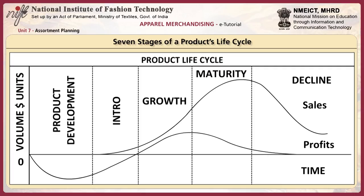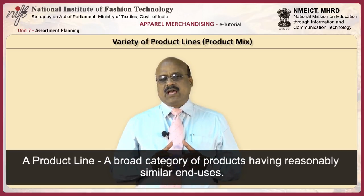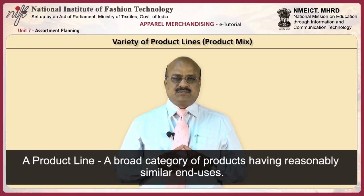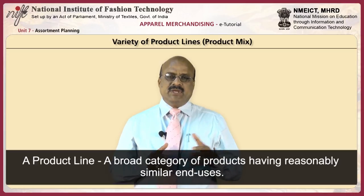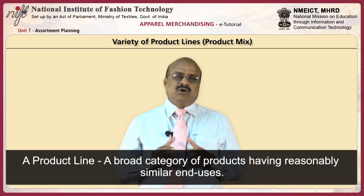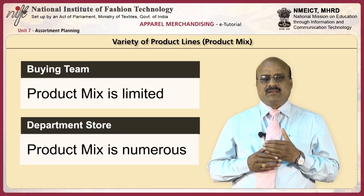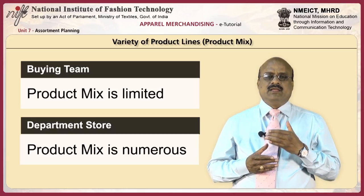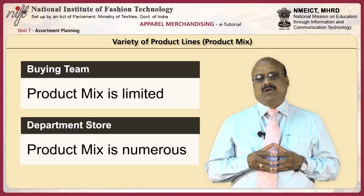A product's lifecycle may be divided into seven stages: research and development, introduction into the market, product growth, and product decline and obsolescence. A product line may be defined as a broad category of products having reasonably similar end uses. The variety of product lines or product mix offered by any retailer will be based on the type of retail store or format — it may be limited as in a specialty store offering only a few lines, or numerous as in a department store.